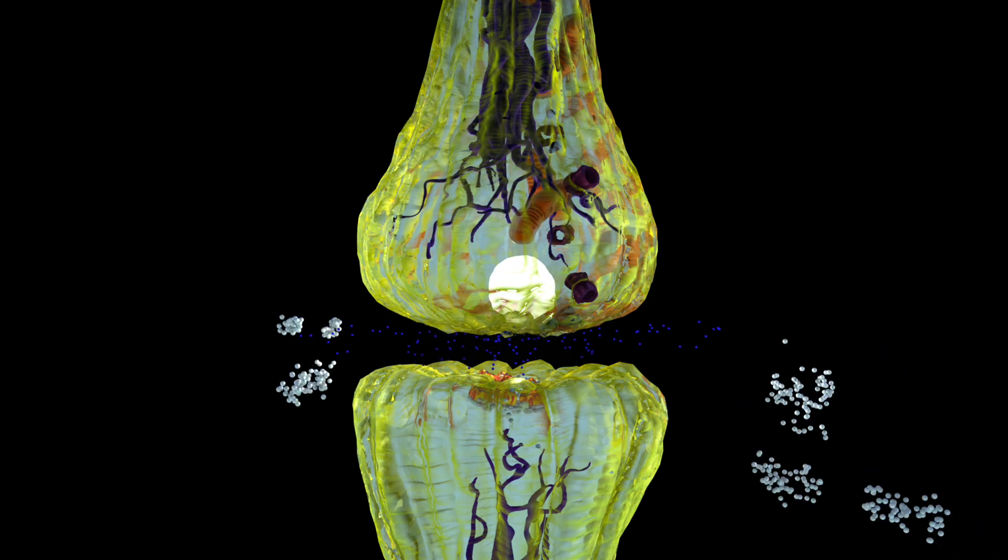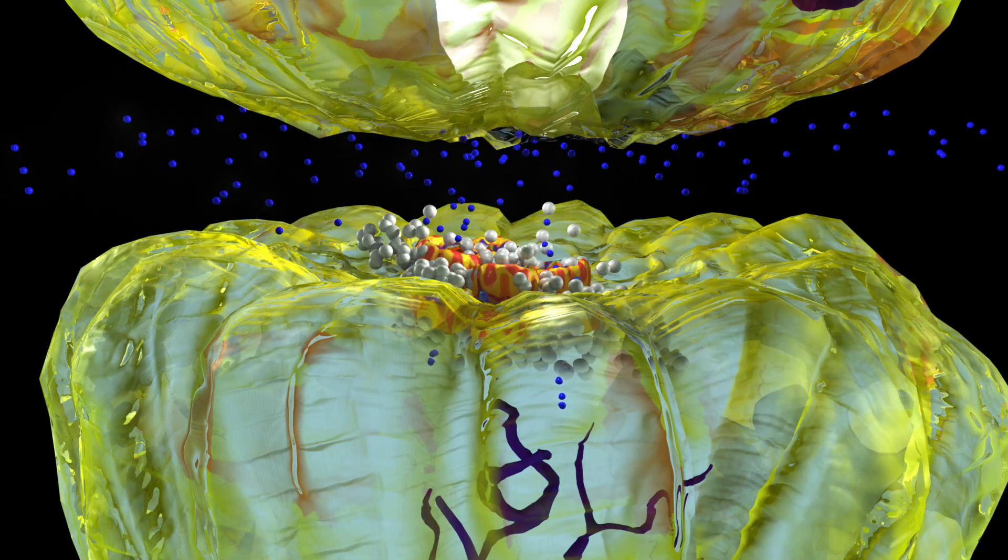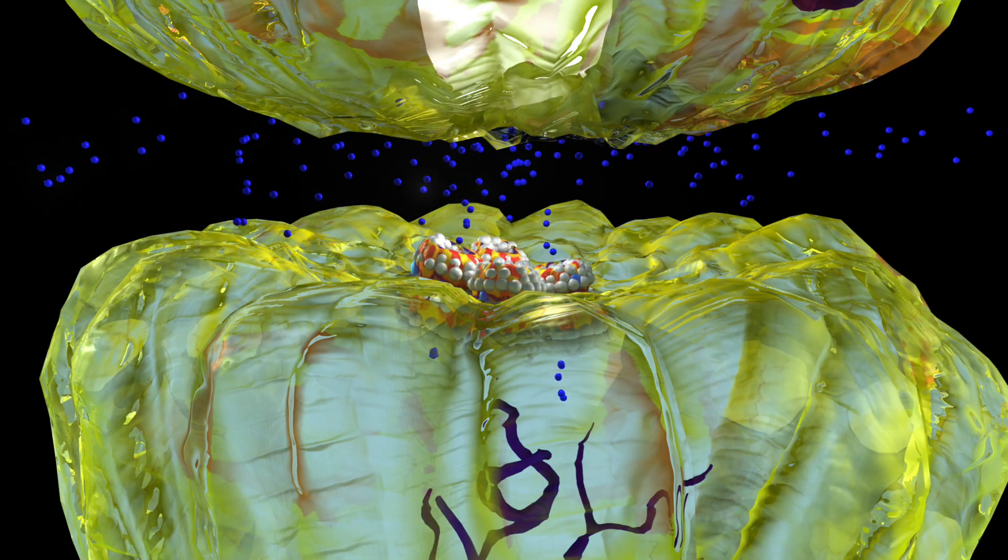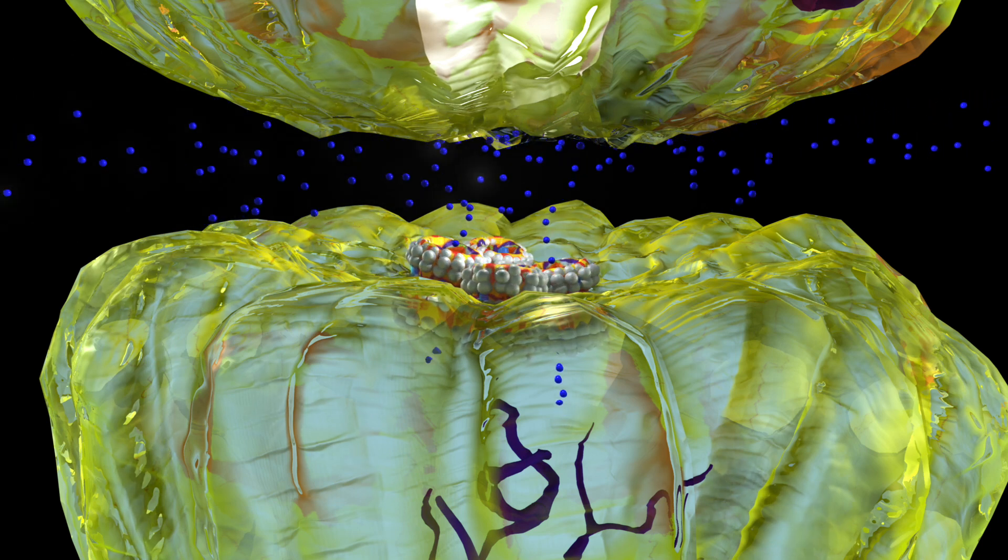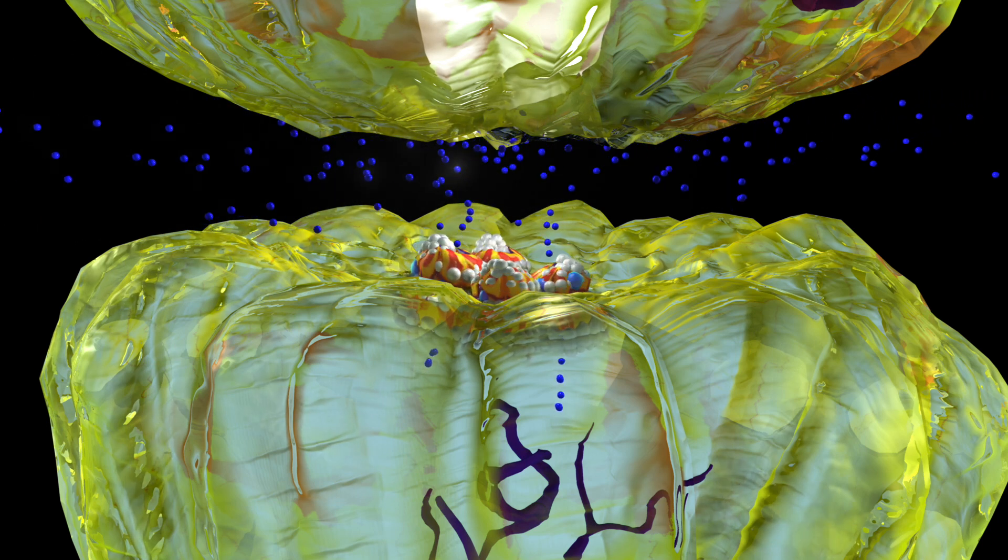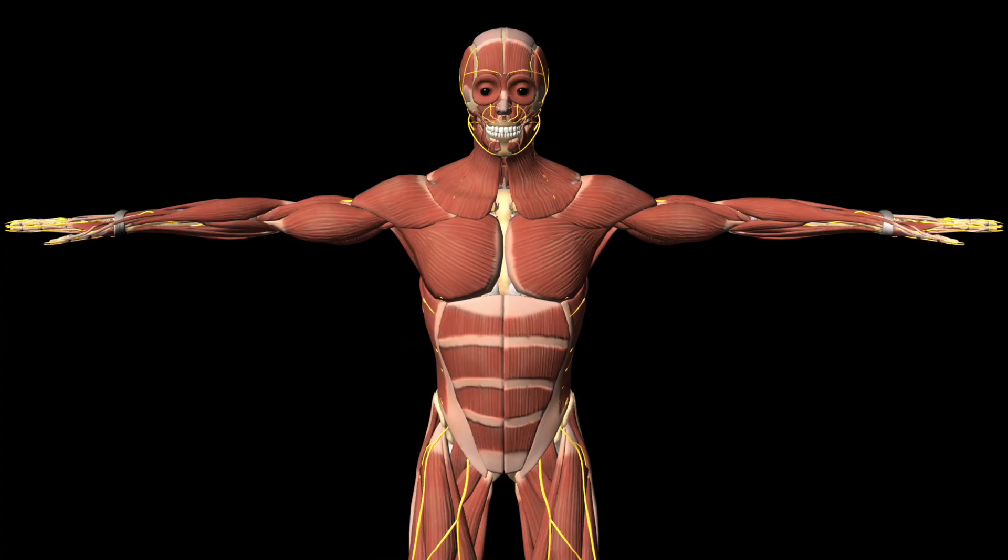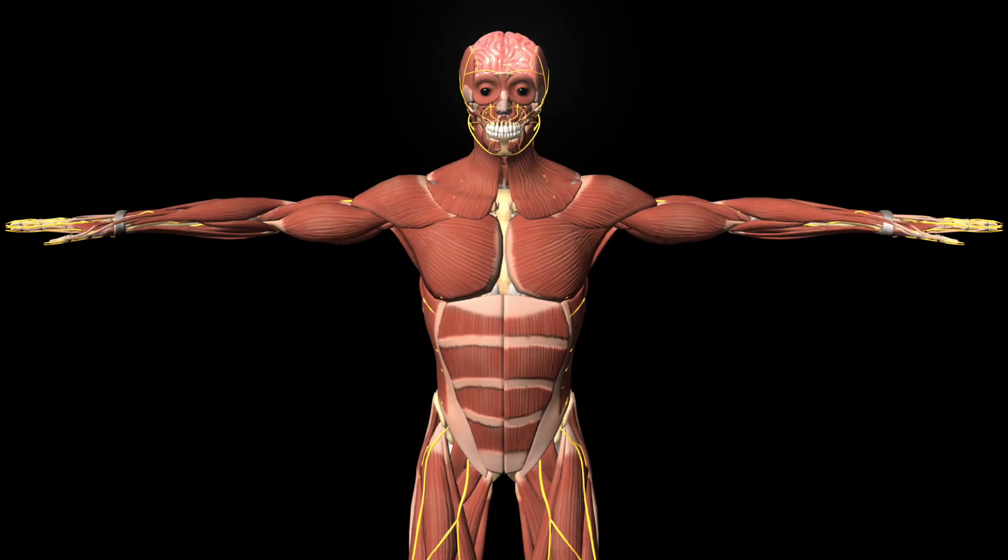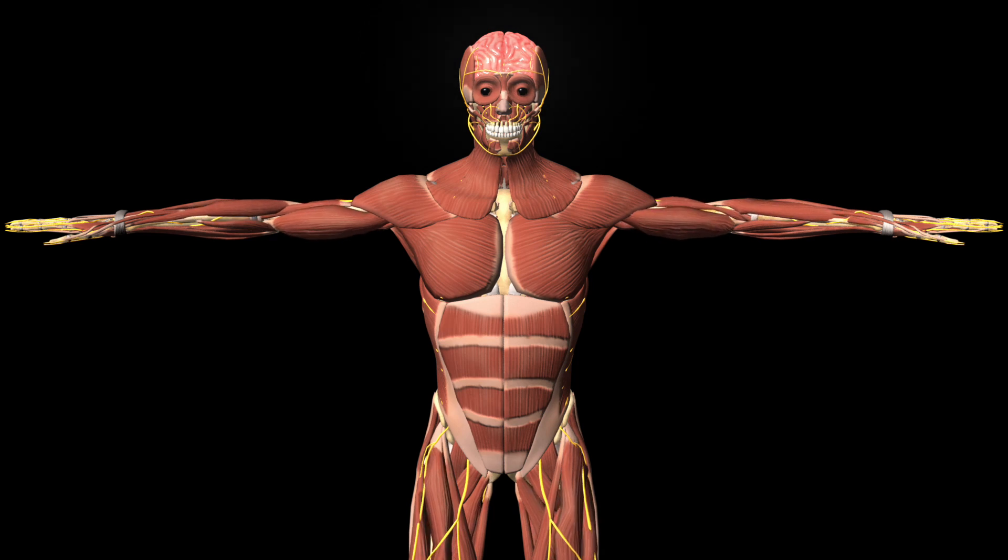When propofol binds to the GABA receptor, it increases the frequency that the receptor opens. With the negatively charged ion entering more frequently, the electrical signal is stopped more potently. Blocking the electrical signal results in the induction of the anesthetic state.